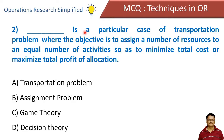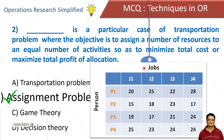Next: blank is a particular case of transportation problem where the objective is to assign a number of resources to an equal number of activities so as to minimize total cost or maximize the total profit of allocation. Options: transportation problem, assignment problem, game theory, and decision theory. Correct answer is assignment problem. In assignment problem, we have various activities and resources — for example, activities could be jobs and resources could be persons. The difference from transportation problem is that we have only one resource for each activity, and our objective is to minimize the cost of assignment.